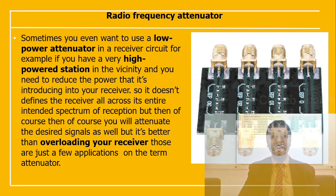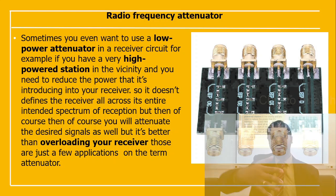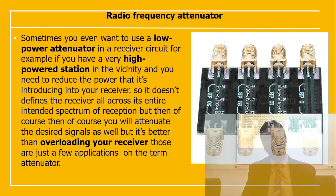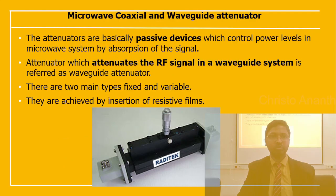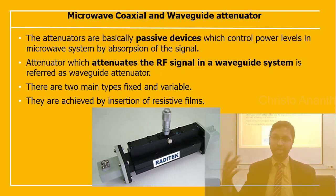Low-power attenuators can be used in the receiver circuit — for example, when there is a very high-power station nearby and you need to reduce the power so it does not desensitize the receiver across the entire spectrum. Rather than overloading the receiver components, it is better to use a low-power attenuator pad.